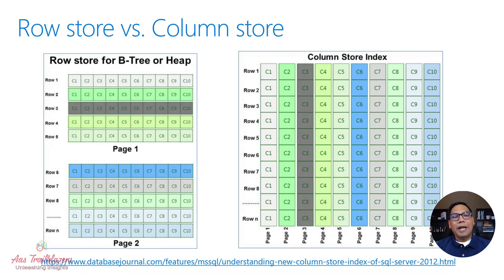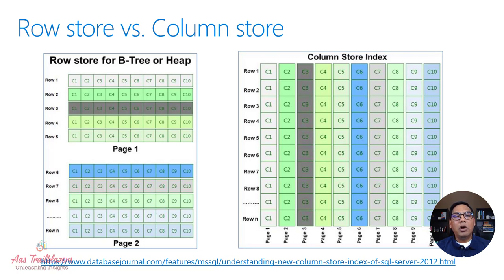In row store index, data for all the columns for a given row are stored together on the same page. This kind of arrangement is good or best for selective queries or transactional workload where you select one or few rows most of the time, and you need all the data for that given row.